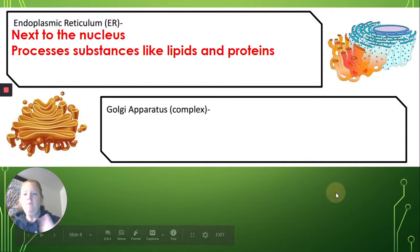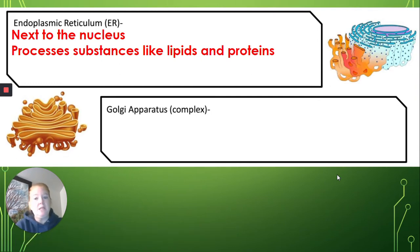The endoplasmic reticulum, what is it? Well, it's found next to the nucleus, as you just saw, and in this picture you can see right here. And it processes substances like lipids and proteins. Proteins if there are ribosomes present, lipids if they're not.